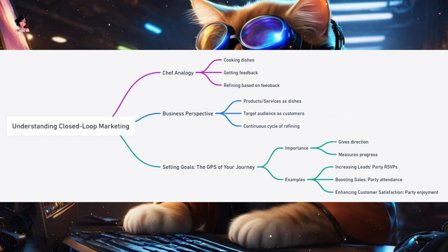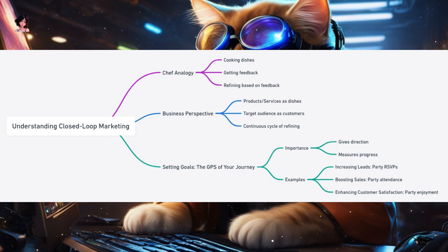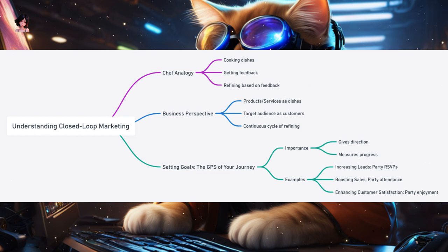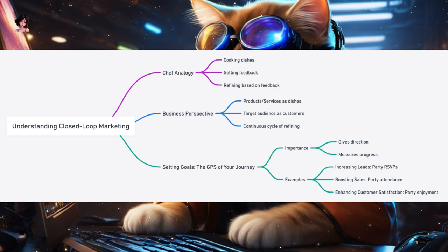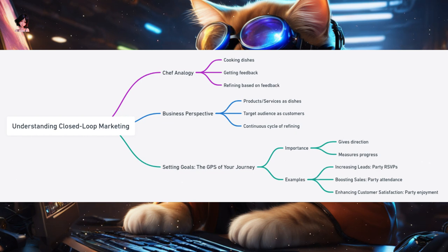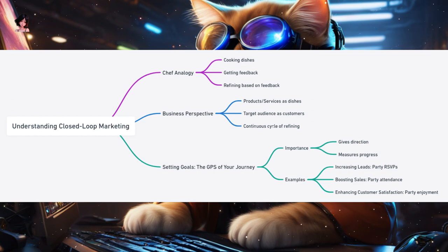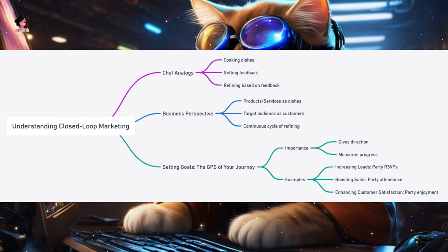In the world of business, instead of dishes, you have products or services. And instead of customers in a restaurant, you have a target audience online or offline. The idea is to put out your marketing strategies, see how your audience responds, gather data on their responses, and then refine your strategies based on that data. This continuous cycle of planning, executing, checking, and refining is what we call a closed-loop in marketing.